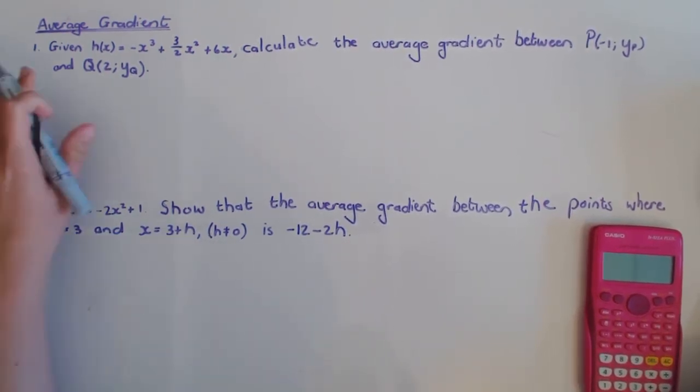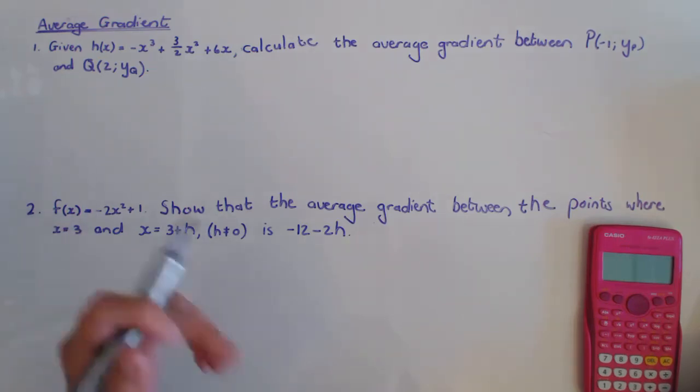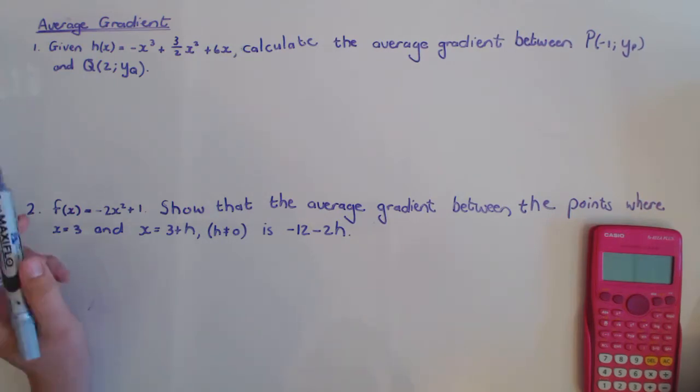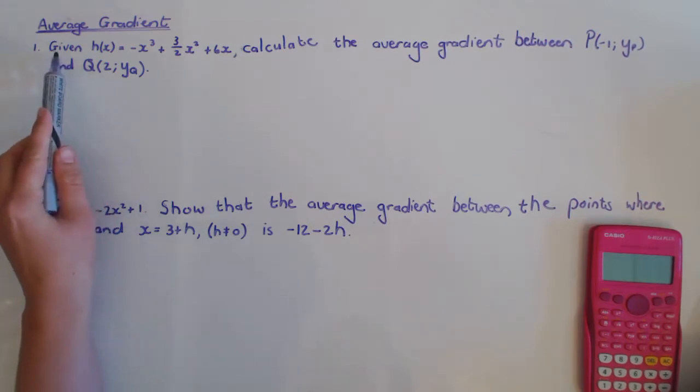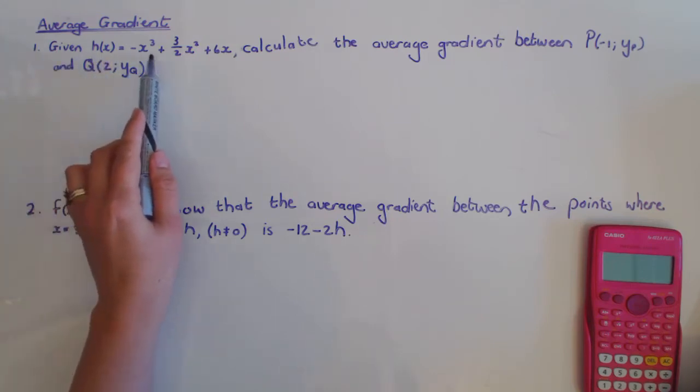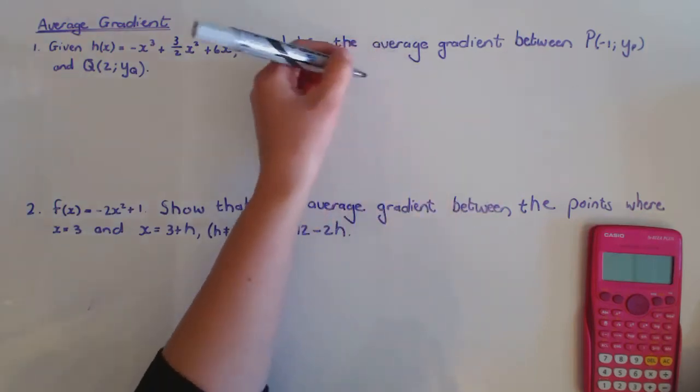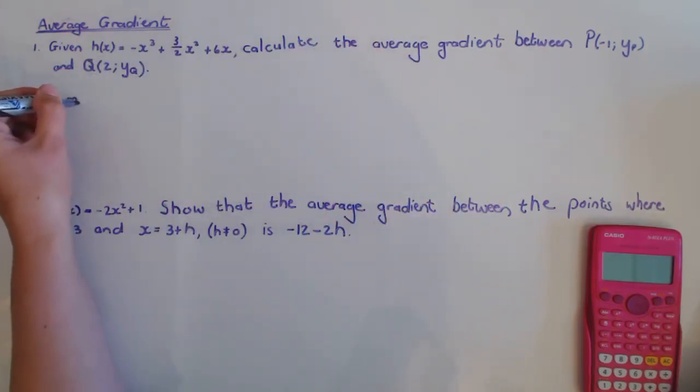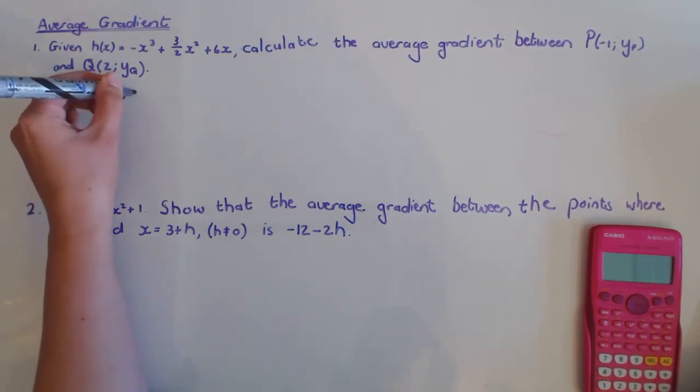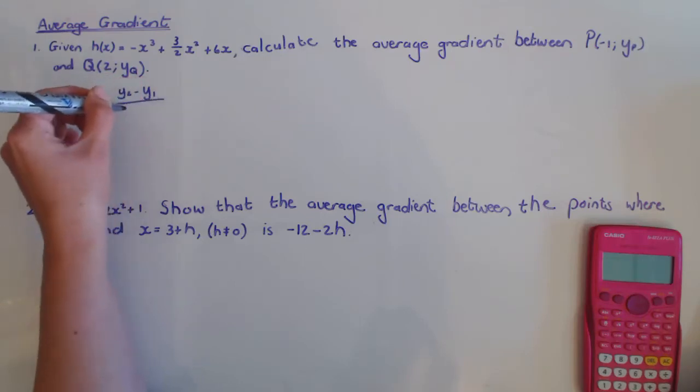So to find the average gradient you can still just use the gradient formula, the difference in y's over the difference in x's, which you've always used before. So now in this example, given that the function h(x) looks like this, calculate the average gradient. Let's use this formula. The gradient average is the difference in y's over the difference in x's.